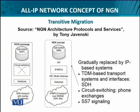This figure, from the book NGN Architecture Protocols and Services by Tony Javinsky, gives a good overview of how technology migration takes place in steps — what we call transitive migration. Looking at the figure from the left-hand side, we see a network based on traditional telecommunication infrastructure: call signaling control using SS7, a circuit switching infrastructure comprising switches and exchange points, and the digital hierarchy — E1s and T1s, SDH, SONET, OC3, OC12, OC48 — and their interfaces to carry individual user data streams or corporate data.